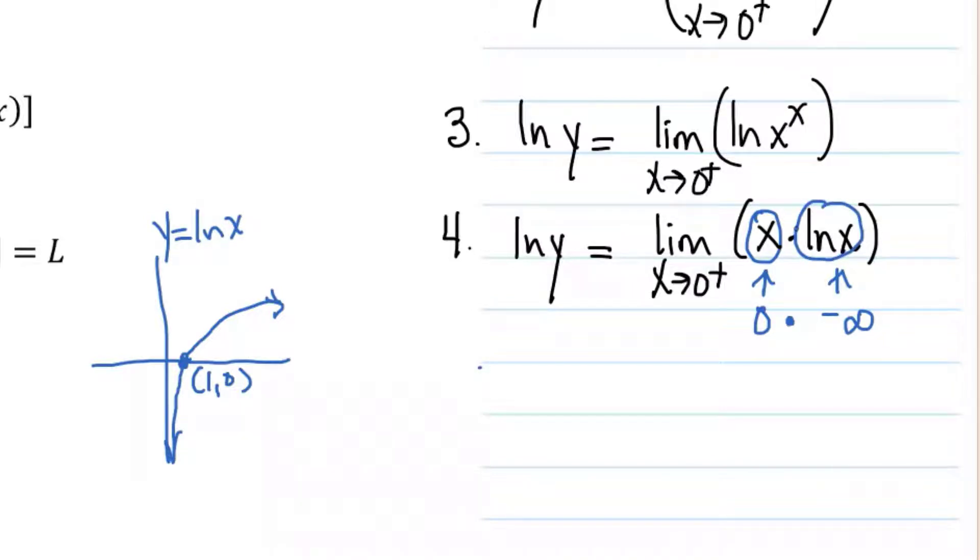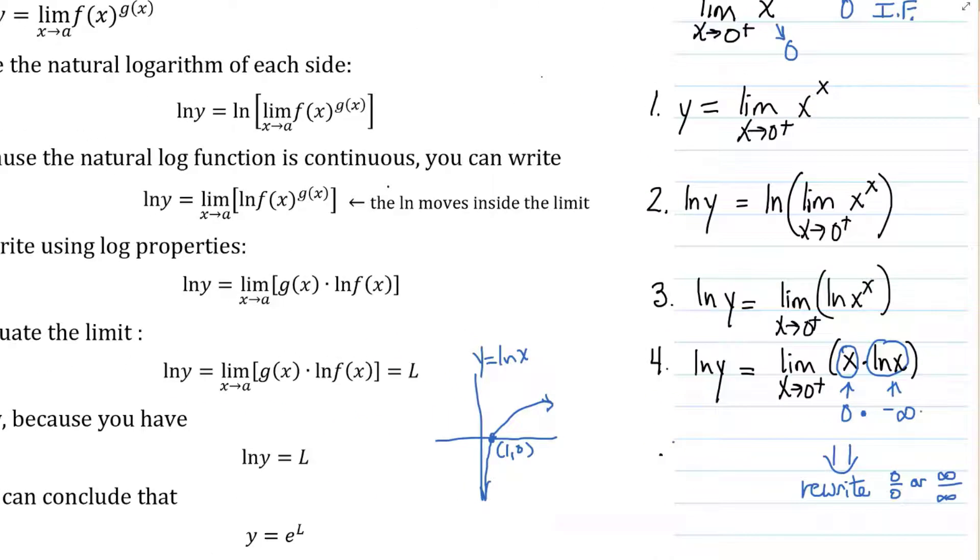So we have a zero times infinity situation. When you have a zero times infinity pop up, we would like to rewrite it so that we can use L'Hôpital's rule. And what are the only two forms we can use L'Hôpital's rule for? Zero over zero and infinity over infinity.